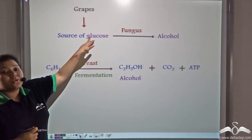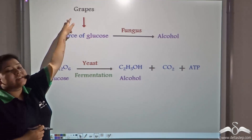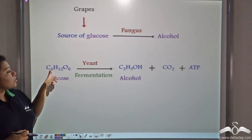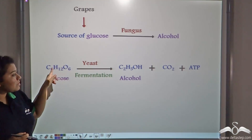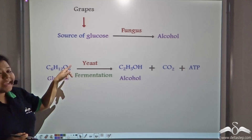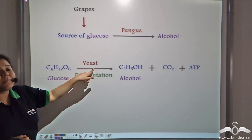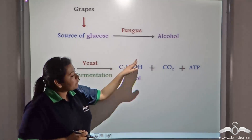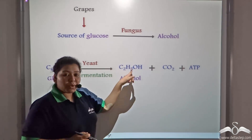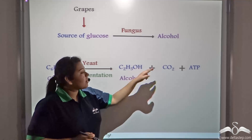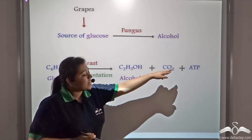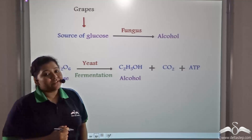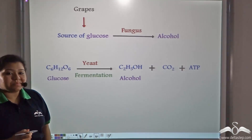The source of glucose are the grapes. So, glucose from the grapes, on being acted upon by yeasts, forms alcohol, carbon dioxide, and energy in the form of ATP.